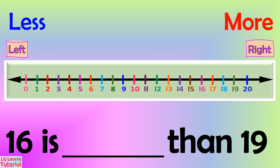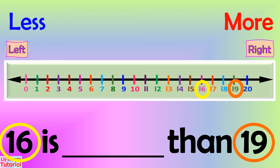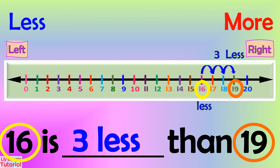In the given question, 16 is blank than 19. Let's circle 16 and 19 on the number line. 16 is at the left side, so it is less. Then we count on until 19 to see how many less 16 is compared to 19: 1, 2, 3 — 3 less. Therefore, we'll write: 16 is 3 less than 19.